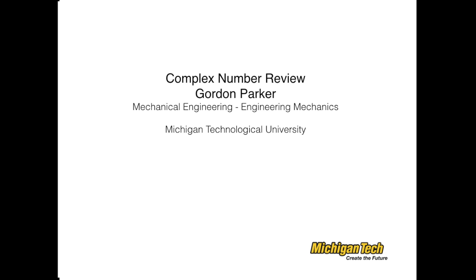Hi, this is Gordon Parker from Michigan Tech. In this video I'm going to do a very brief review of complex numbers. To get started, let's say we have a complex number that looks like this: sigma plus j omega, where sigma and omega are constants. We call this the rectangular form.